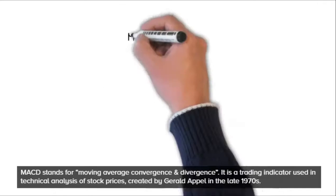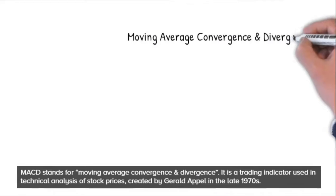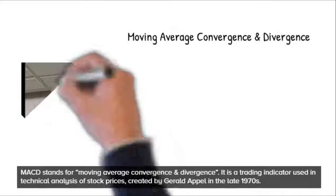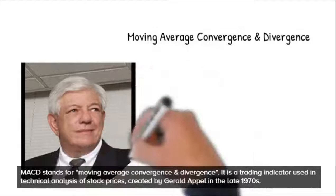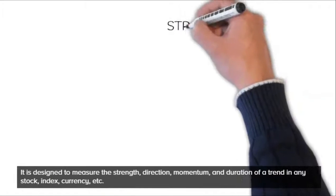What is MACD? MACD stands for Moving Average Convergence and Divergence. It is a trading indicator used in technical analysis of stock prices, created by Gerald Apple in the late 1970s.